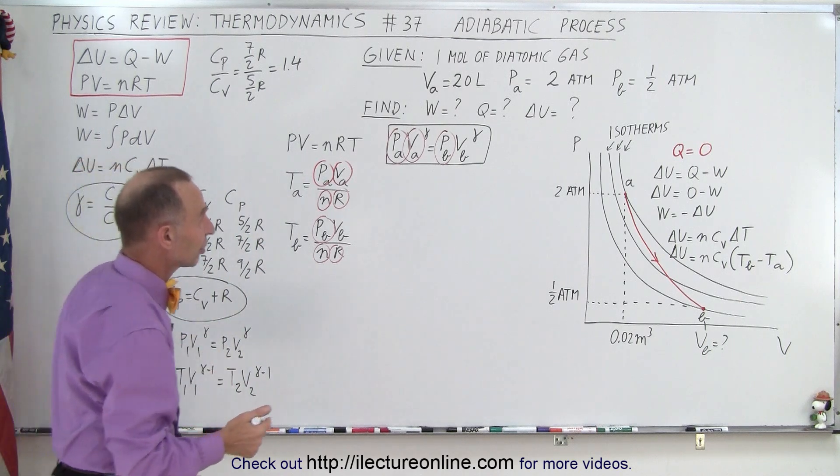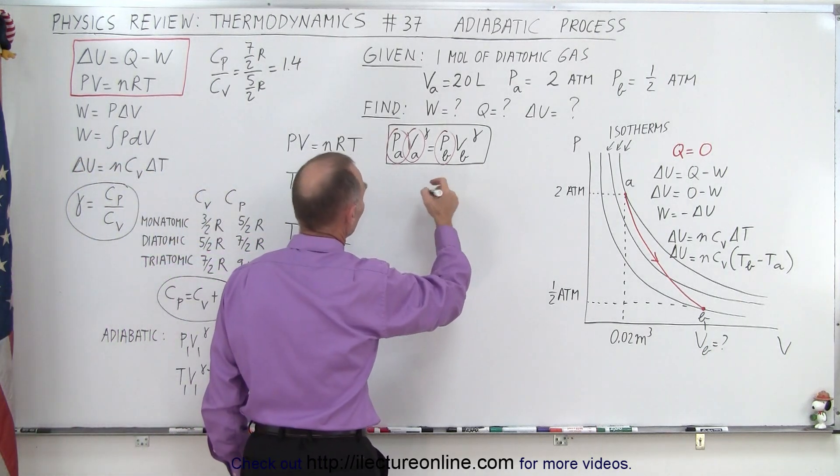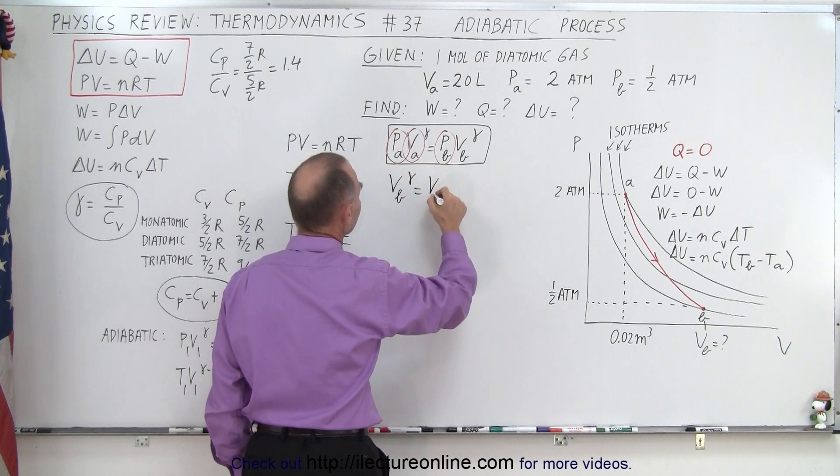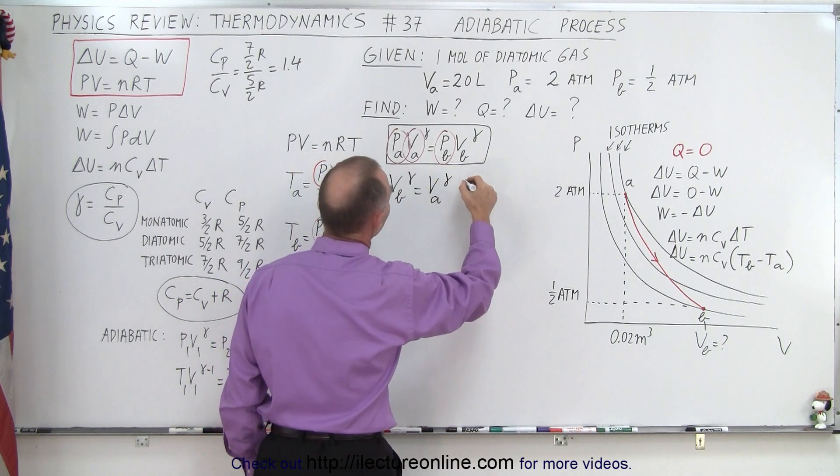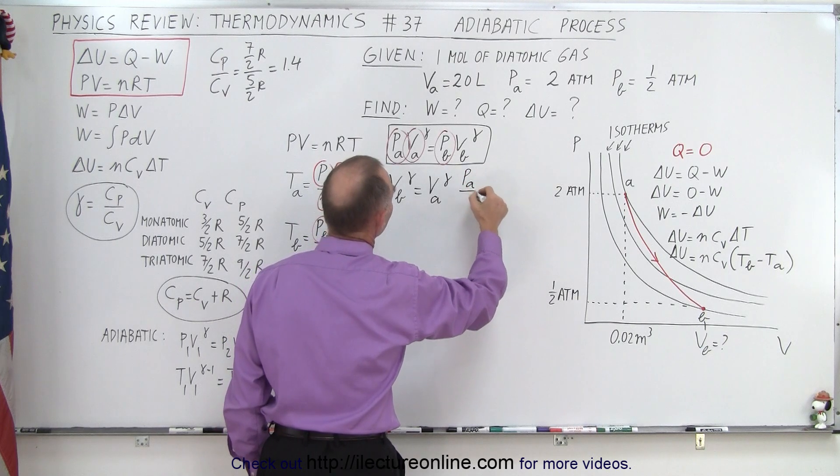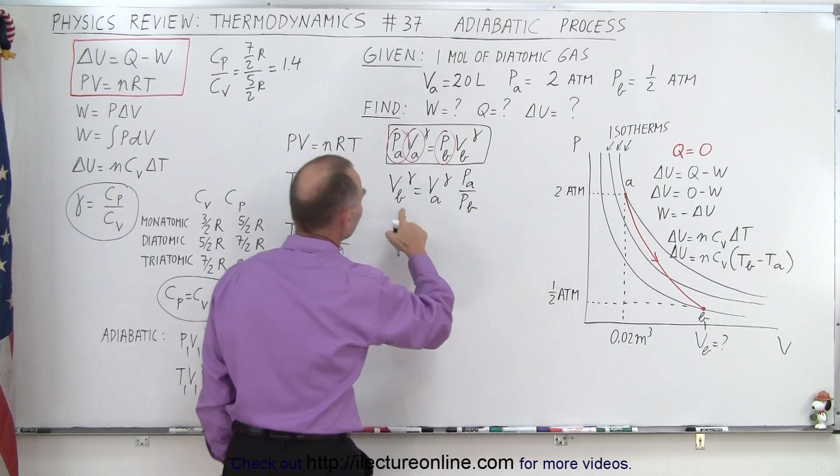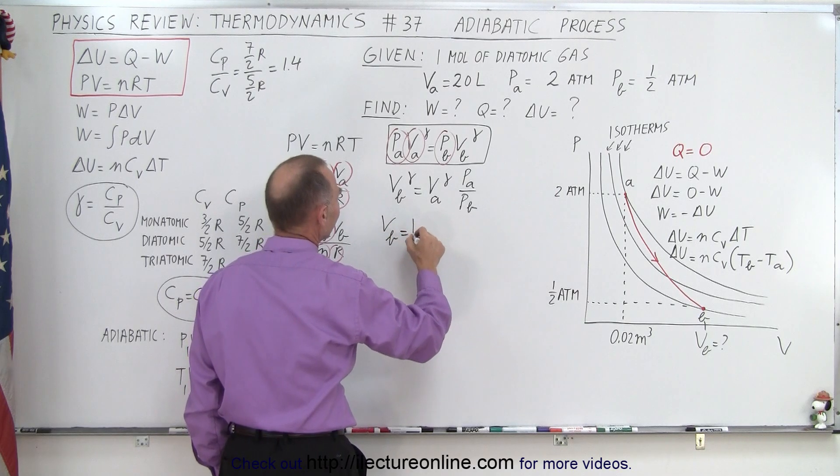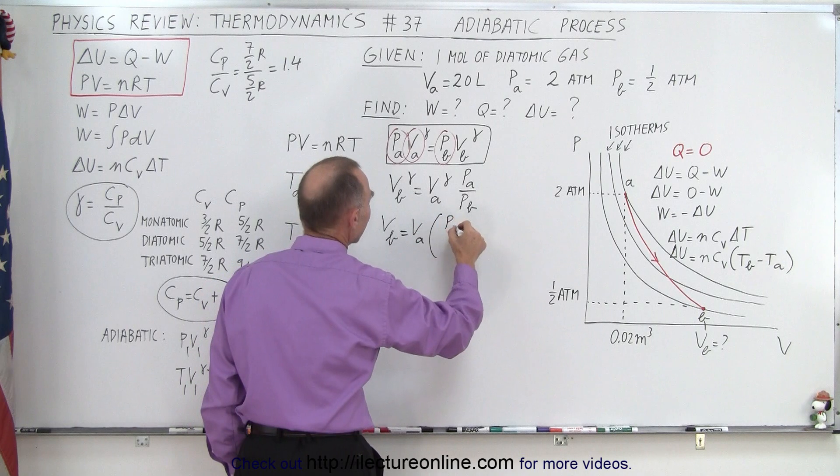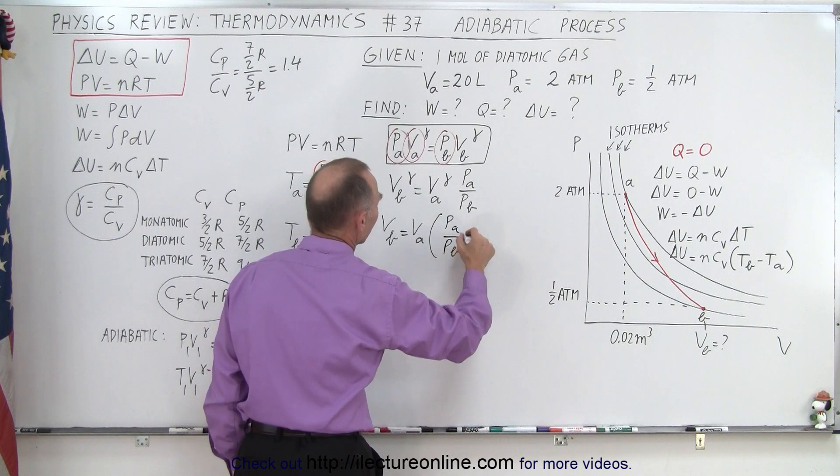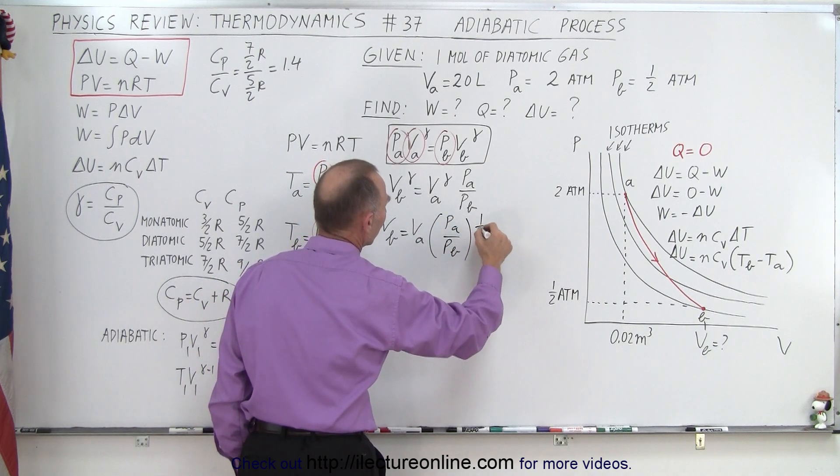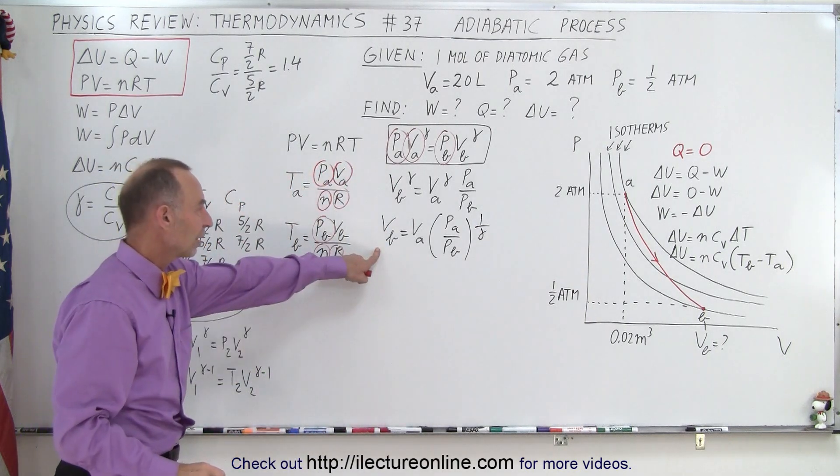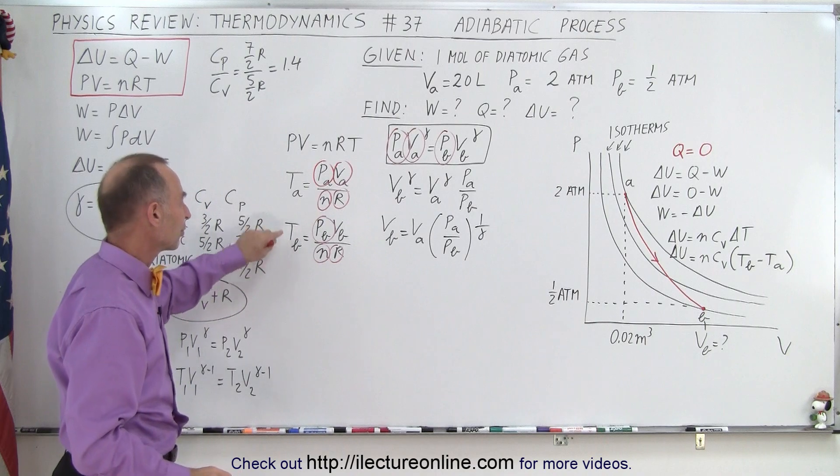We do have to rearrange things a little bit for this equation. So we have V at B to the gamma equals V at A to the gamma, and that would be times pressure at A divided by pressure at B. And then if we take the gamma root of both sides, we get V at B is equal to V at A times P_A over P_B to the gamma root, which is raised to the 1 over gamma exponent. And so this equation allows us to find V_B, we plug it in here, we find the temperature.